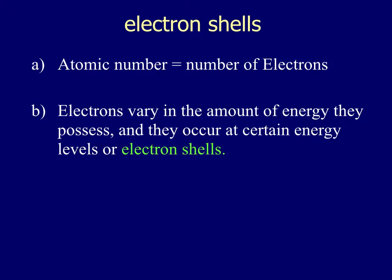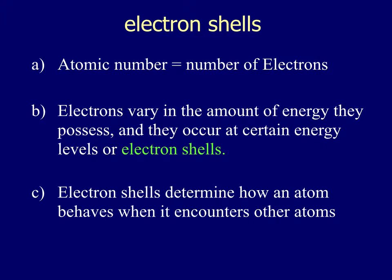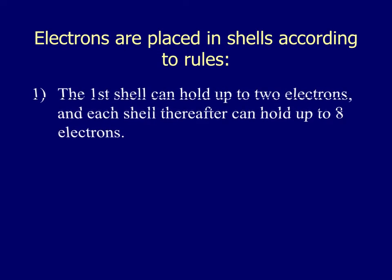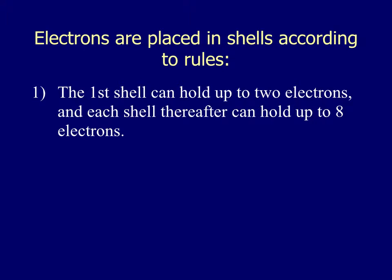So they occur at certain levels. You can be at n equals 1, n equals 2, n equals 3, and so on like our Bohr model said. Electron shells determine how an atom behaves when it encounters other atoms. So depending on how many shells and how many valence electrons you have, that's what determines a chemical bond. So electrons are placed into shells according to the following rules.